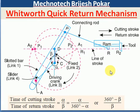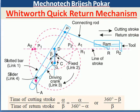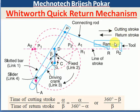Welcome to Magno Tech YouTube channel. Our today's topic is the Whitworth Quick Return Mechanism, which is mostly used in shaping and slotting machines. In a shaping machine, during the cutting stroke we remove the material, and the return stroke is an idle stroke. We have to return the tool in a fast manner, so the cutting stroke has a slow speed and the return stroke should have a high speed — this is called the quick return mechanism.